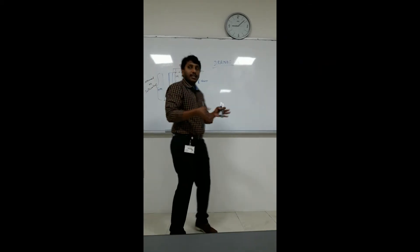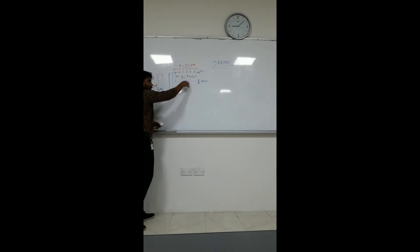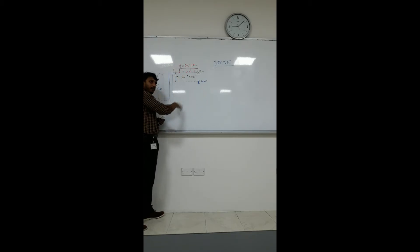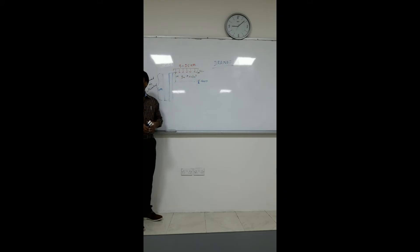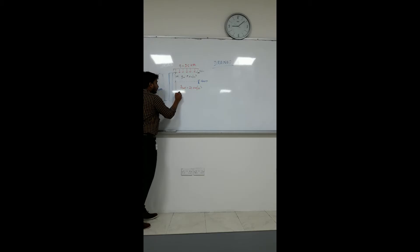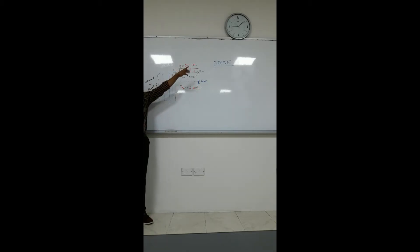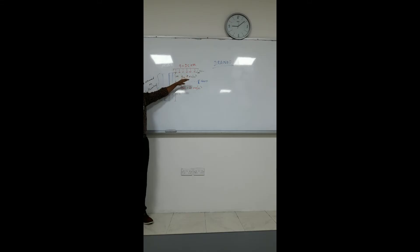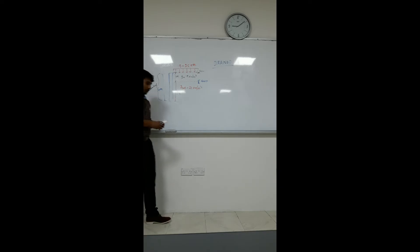In the drained condition, drainage is available, meaning free flow of water through the soil is possible. When load is applied, we do not consider both layers as fully saturated. The soil above the groundwater table is considered dry, and the soil below the groundwater table is considered saturated. So we calculate separately — for the 1 meter layer and for the 3 meter layer.